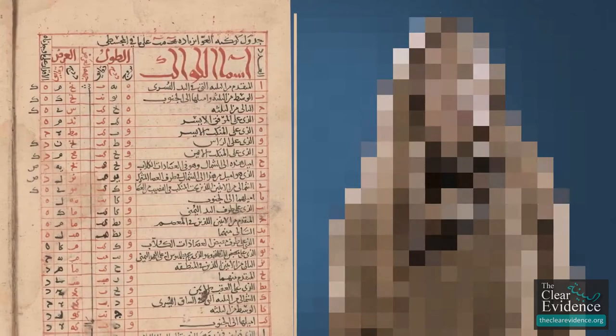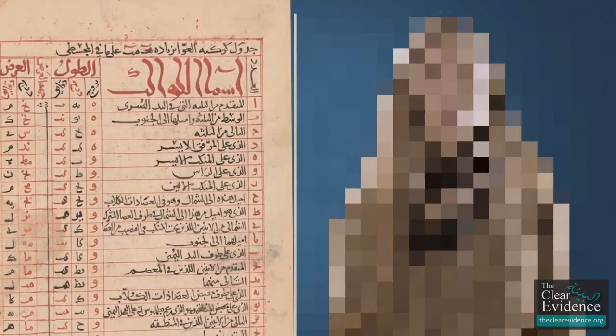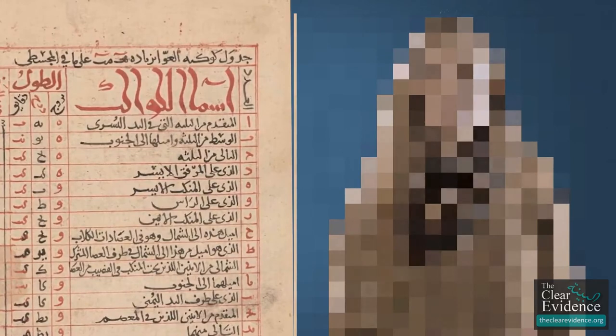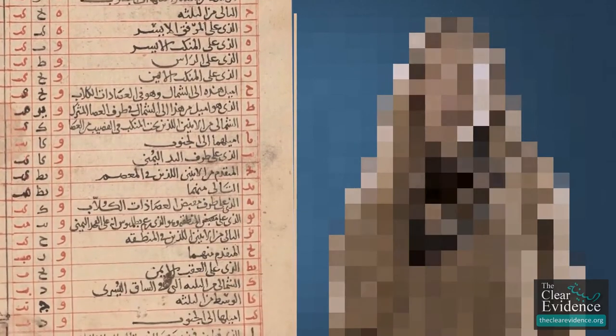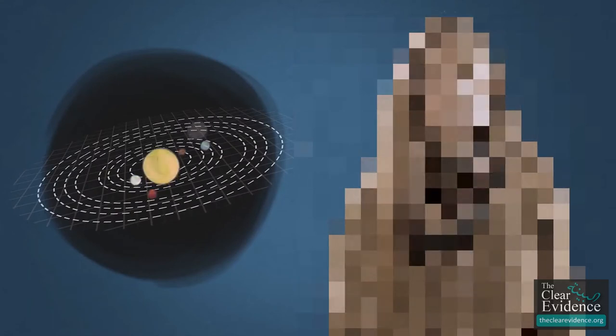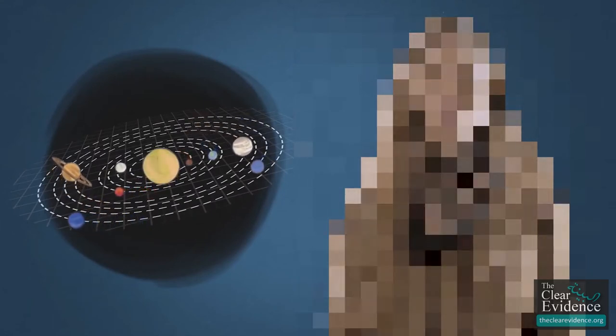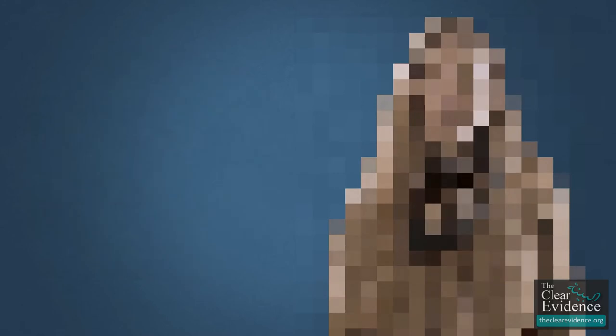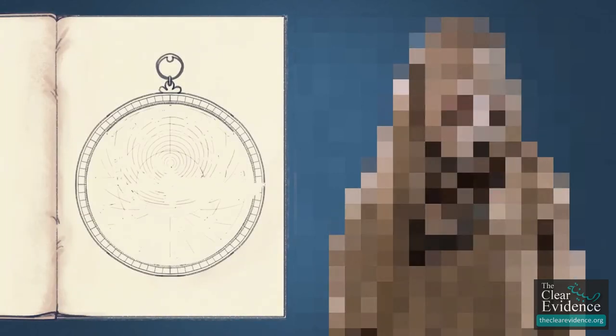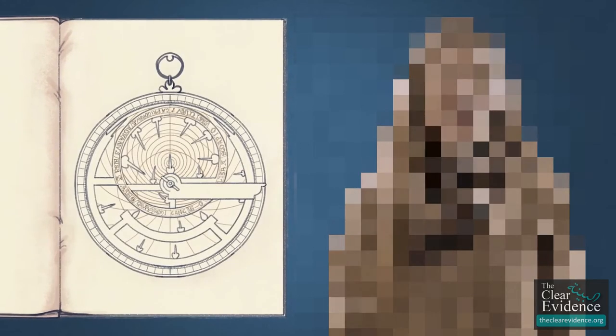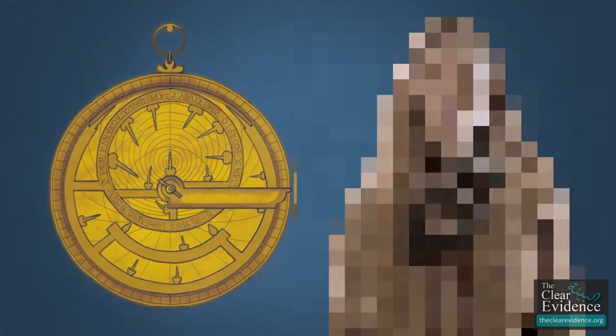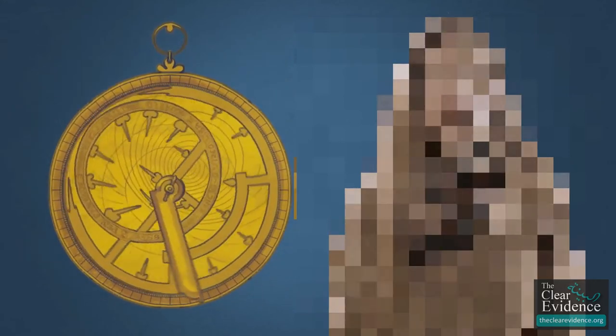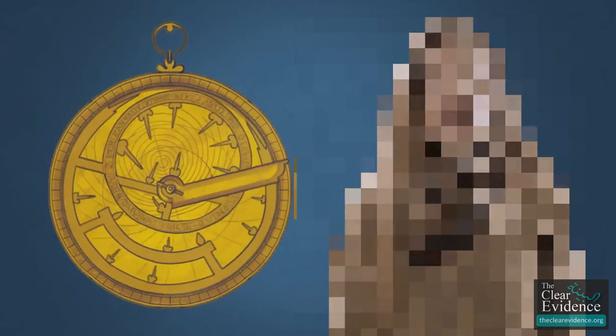His third book is a set of star tables in which he uses trigonometry, spherical astronomy and other advanced math to calculate the changing positions in the heavens of the planets, sun and moon. Finally, al-Khwarizmi wrote a treatise on the astrolabe, which was the most important scientific instrument until Galileo invented the telescope in the 17th century.